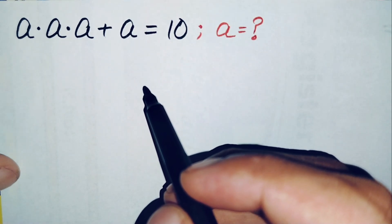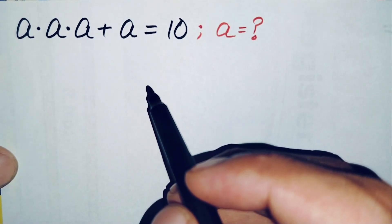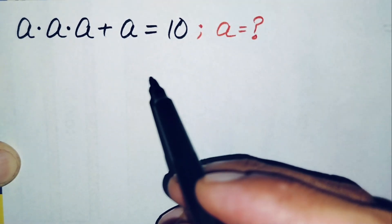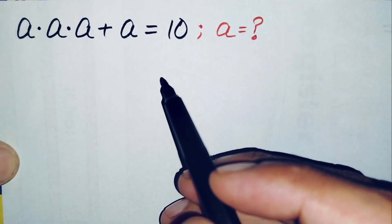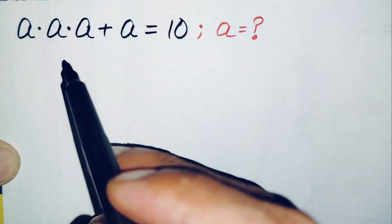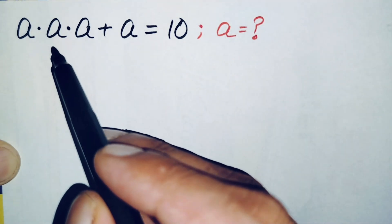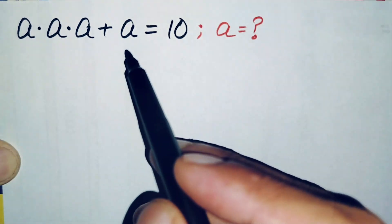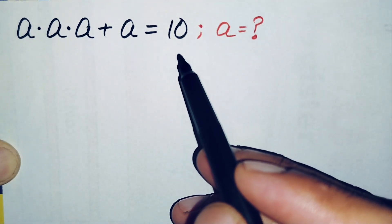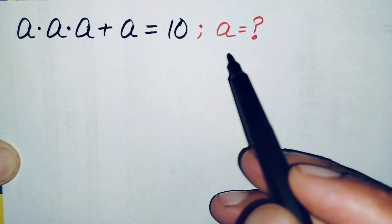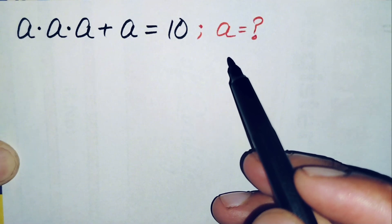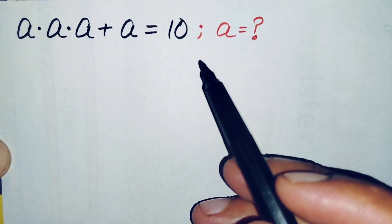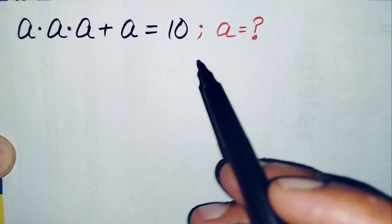Hello everyone. Welcome to Math Explorer. How to solve this nice algebra math problem? That is a times a times a plus a is equal to 10. So here we will try to find the value of a. Now how can we solve this problem?